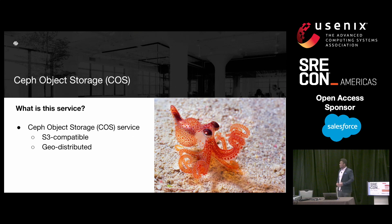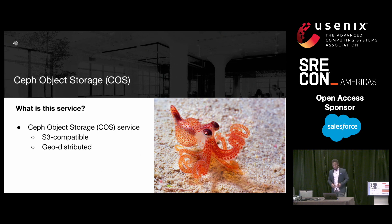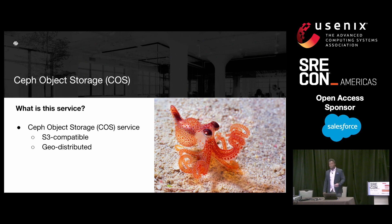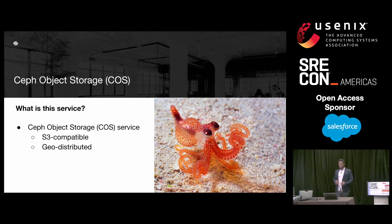Our service is an object storage service, just like Google Cloud Storage or Amazon S3, if you've ever used those before. The only difference is that our object storage service is backed by Ceph. Ceph is an open-source distributed storage system which stores data as objects, and Ceph provides a RESTful object storage interface which is compatible with the Amazon S3 API. All our object storage users connect to our service via the use of S3 client programs. For high availability purposes, this service is geo-distributed and available in all our data centers.